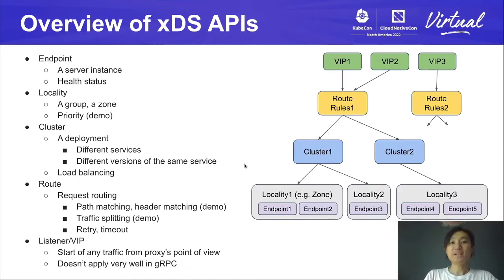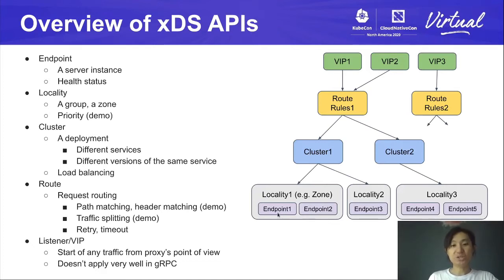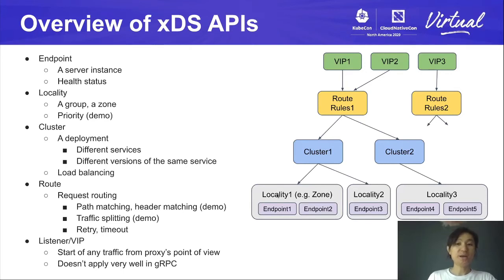This is an overview of the XDS APIs. I'm not going to get into many details of the protocol, but I want to give an overview because it helps understand the demo at the end. From bottom up, the first thing is endpoint — a server instance that contains the server address and whether the server is healthy. Above endpoint is a locality, which is a group of endpoints — you can understand it as a zone. A special thing that locality can do is priority. So if we give one locality P0 and another P1, the lower priority locality is only used when the higher priority is not healthy. We'll have a demo to show this at the end.